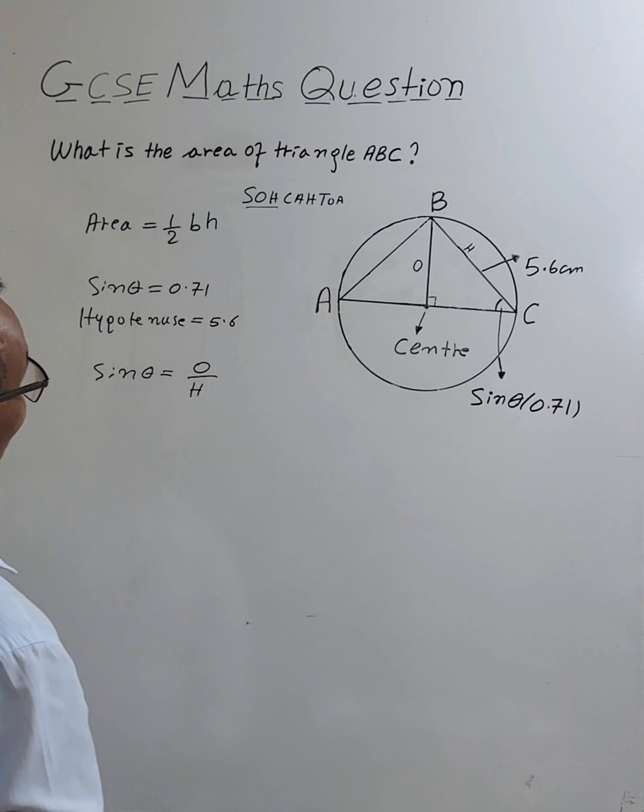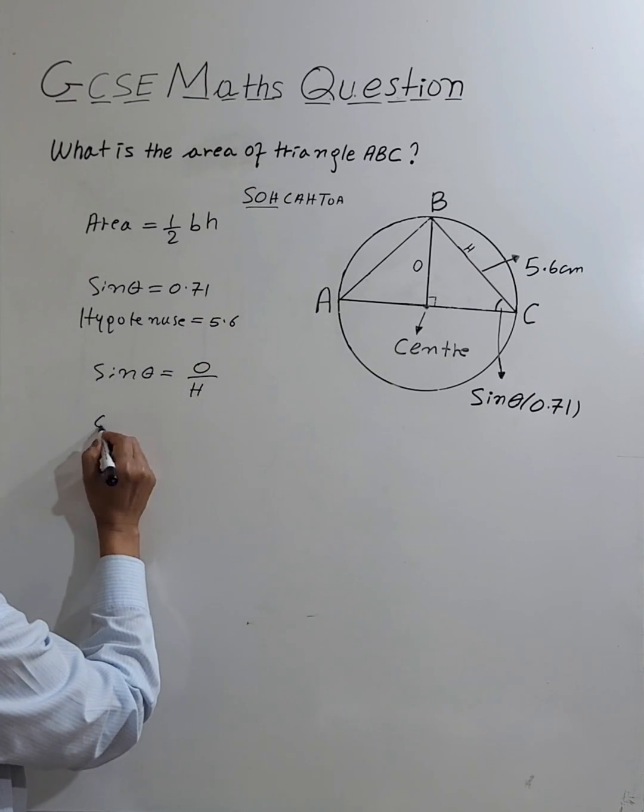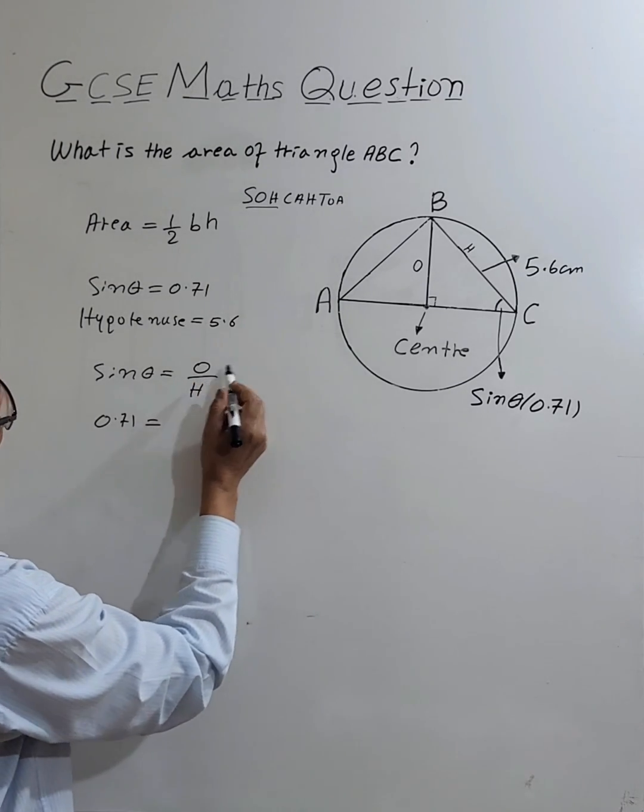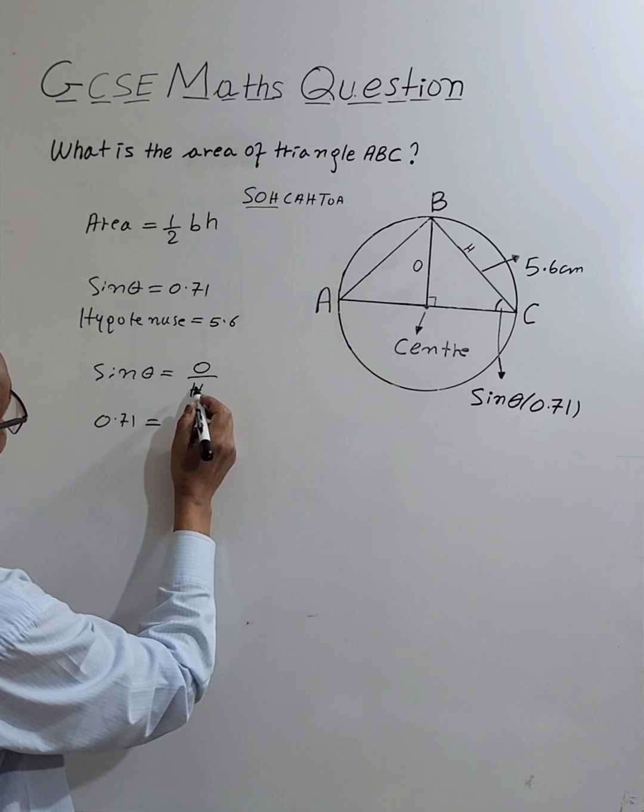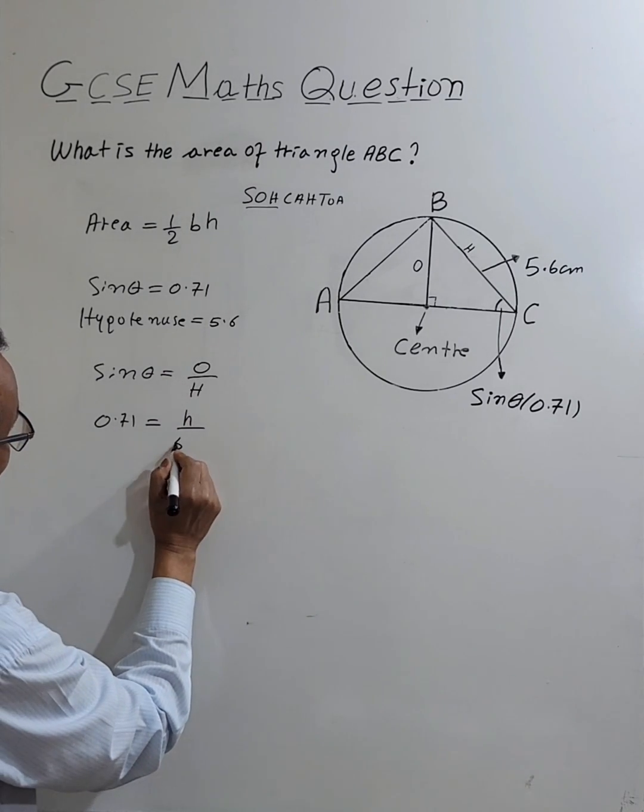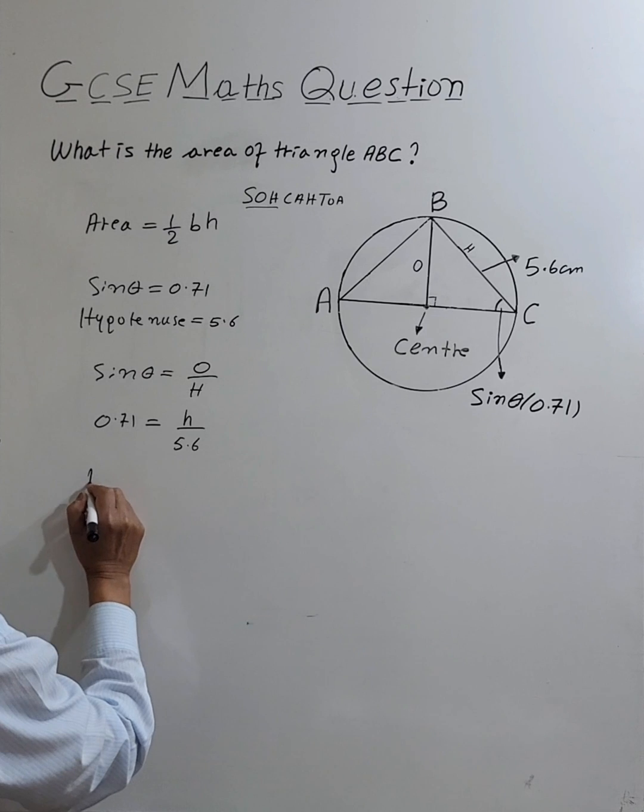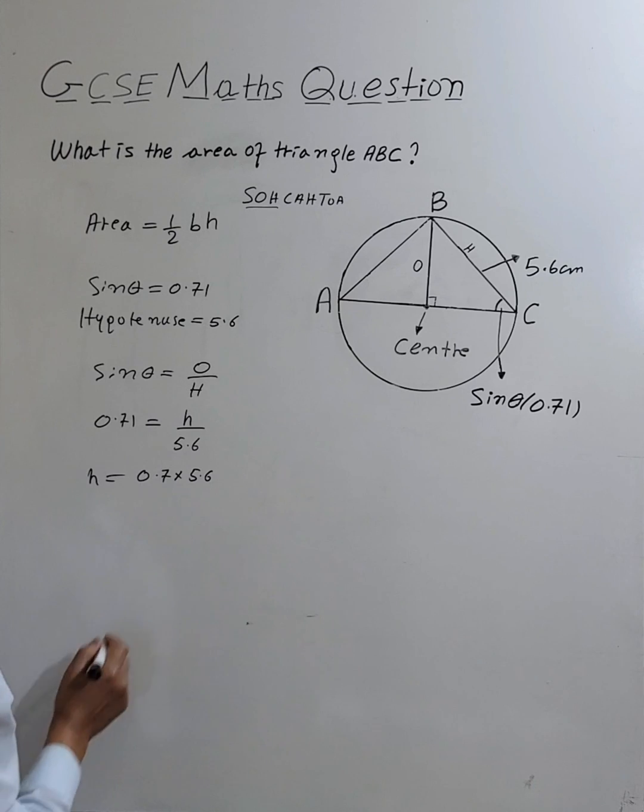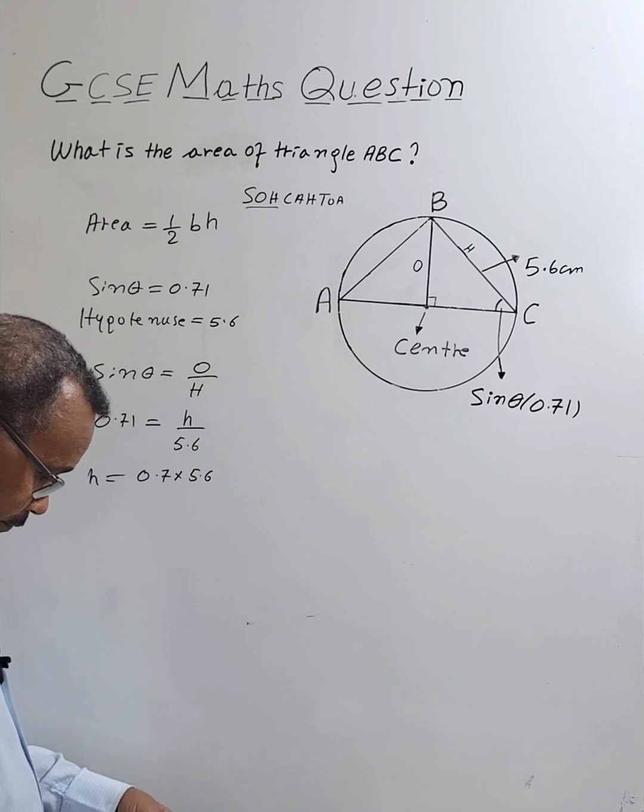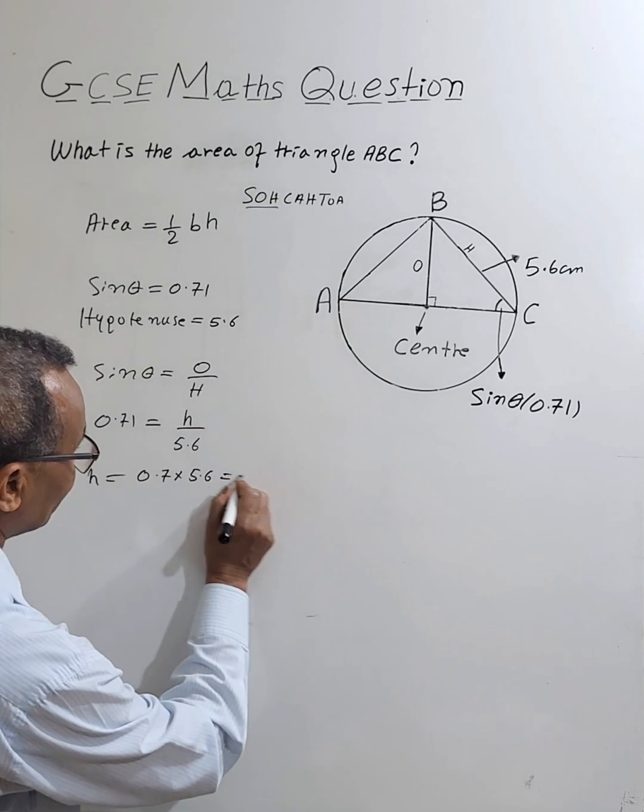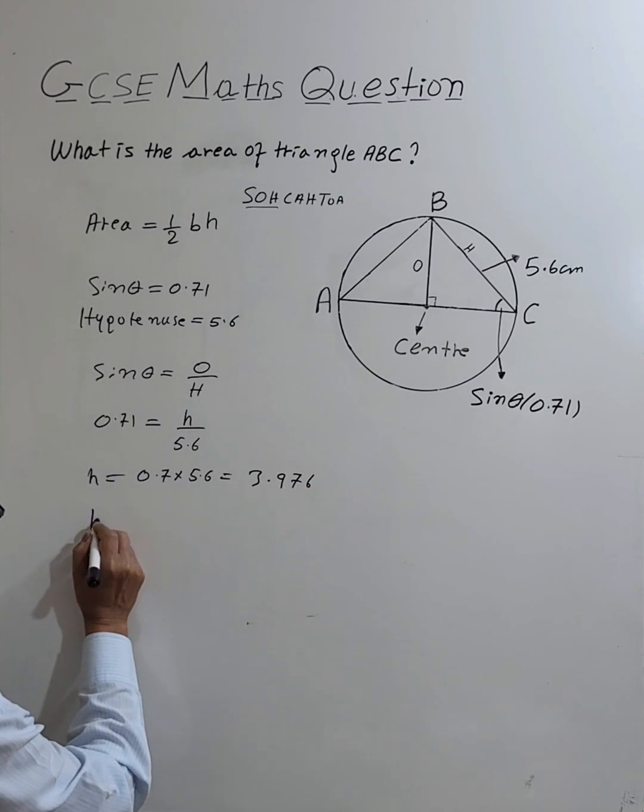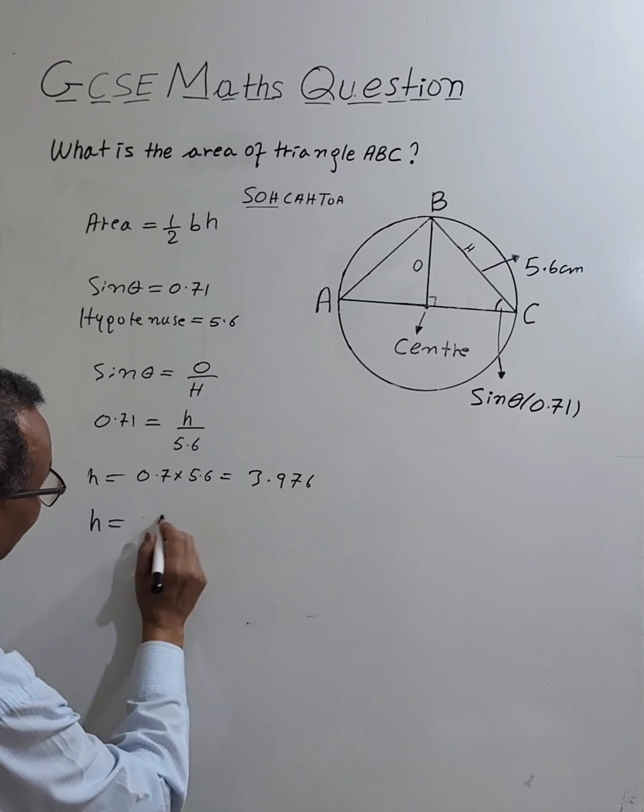So sine theta is 0.71 equals height over the hypotenuse which is 5.6. So height equals 0.71 times 5.6, which equals 3.976. So height equals, just round up, 4.